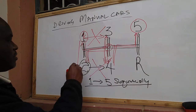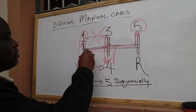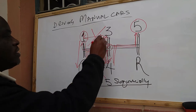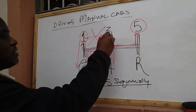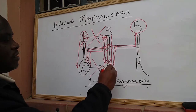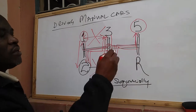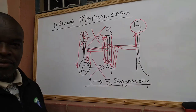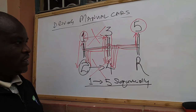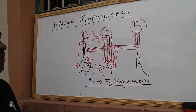You are always supposed to sequentially change gears in a car: number one to number two, number two to number three, number three to number four, number four to number five. That is how we sequentially change gears in a car.